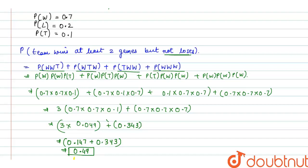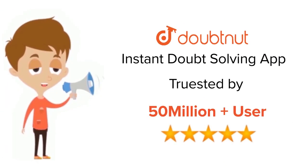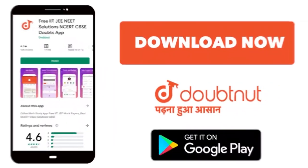This is the probability of a given match where team wins at least two games but not losses. Thank you. For class 6 to 12, IIT and NEET level, trusted by more than 5 crore students, download Doubtnet app today.